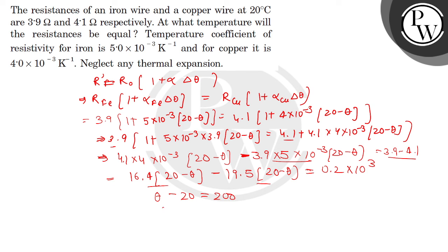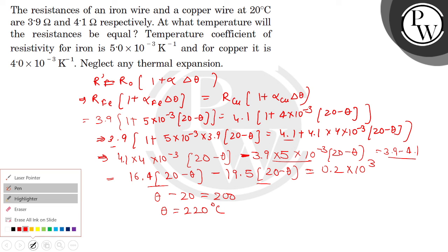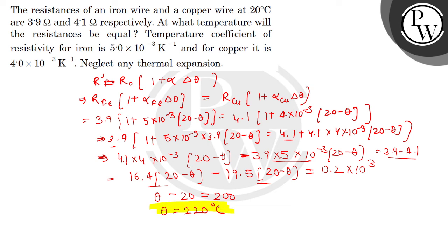We are left with θ = 220°C, which is our required answer. So we have got our answer as 220°C — this is the temperature at which the resistance of both the iron and the copper wire will match. I hope you all got this question, and best of luck.